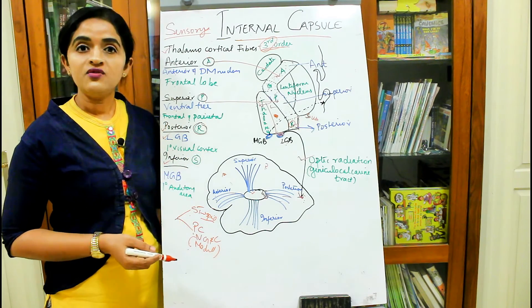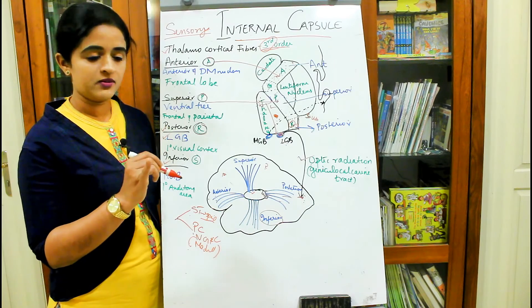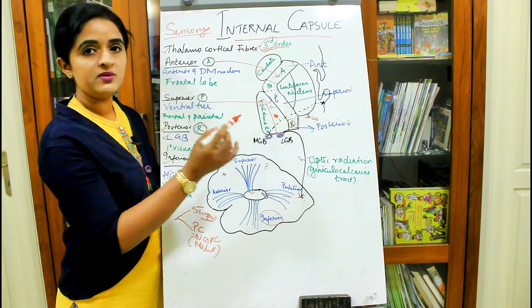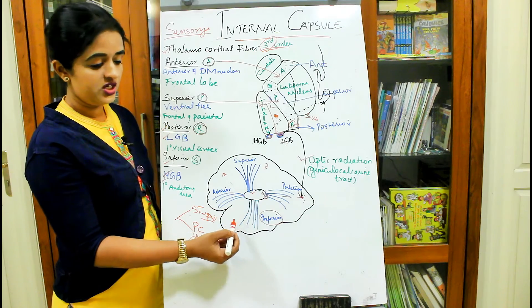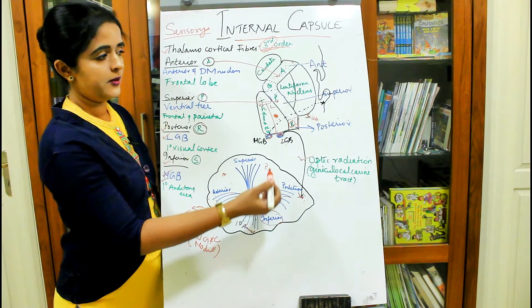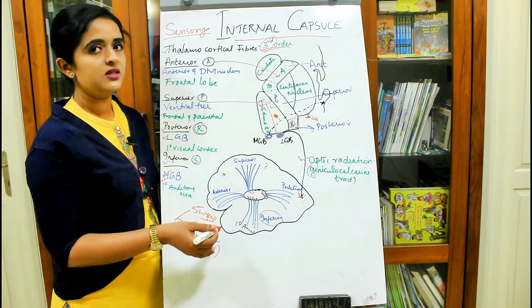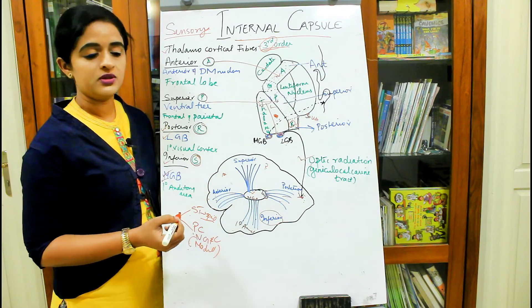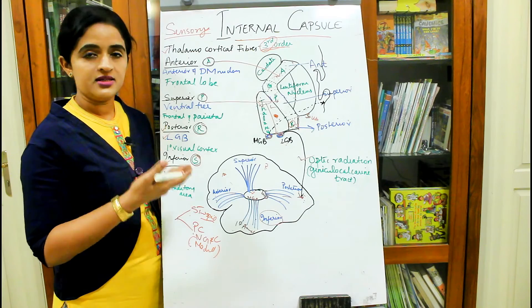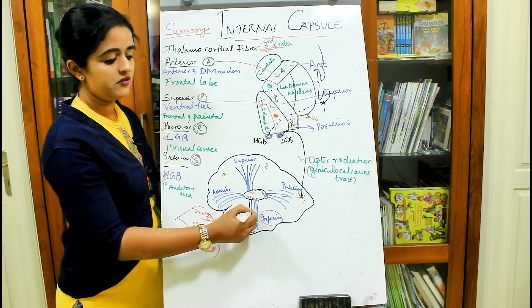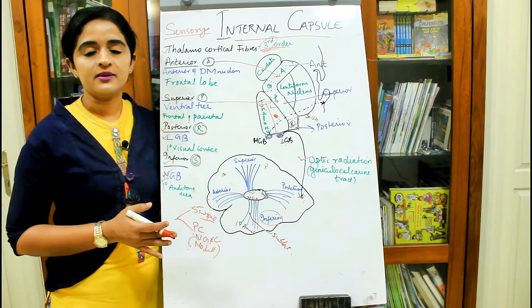The inferior thalamic radiations arise from the medial geniculate body of the thalamus — M for music — and project to the primary auditory area in the temporal lobe. Since the temporal lobe lies below the lentiform nucleus, these fibers pass through the sublentiform part of the internal capsule. This completes the four thalamic radiations: anterior, superior, posterior, and inferior.